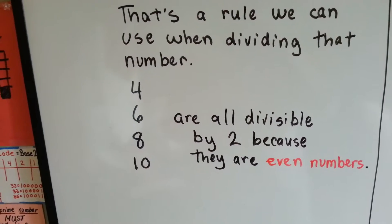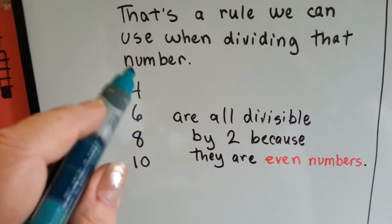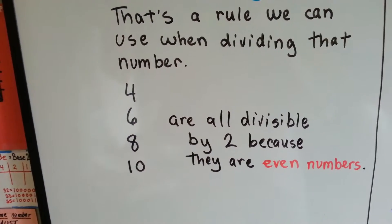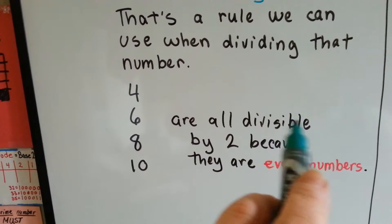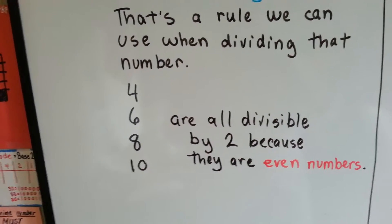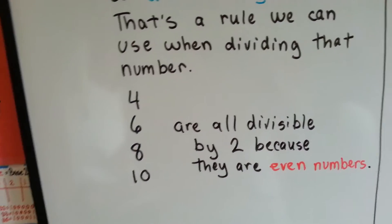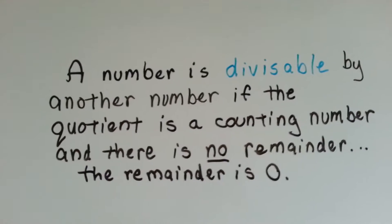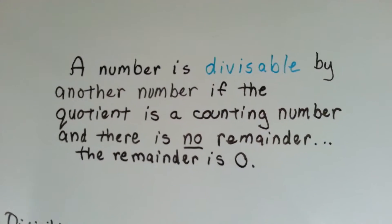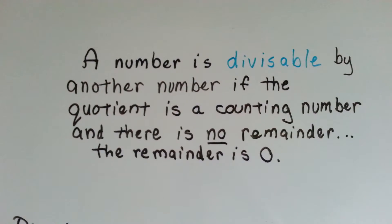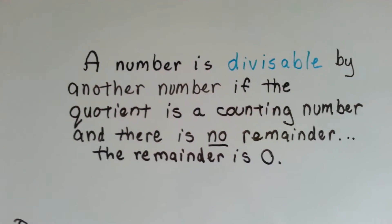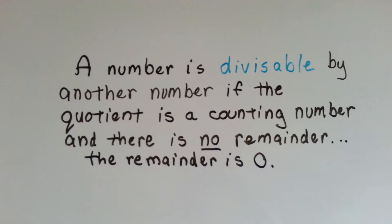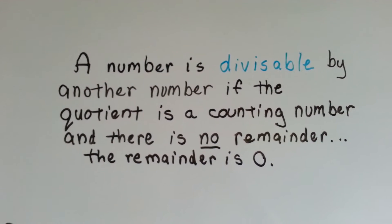That's 2's divisibility rule. If the number is even, it could be divided by 2. Divisible means able to be divided by. A number is divisible by another number if the quotient — the answer — is a counting number and there's no remainder; the remainder is 0.